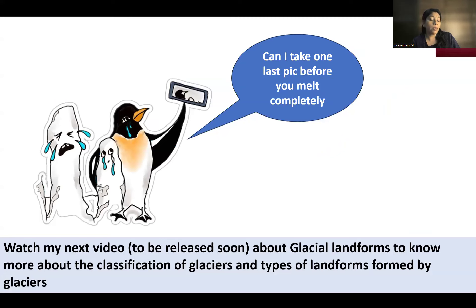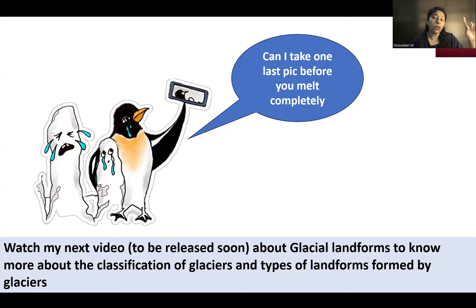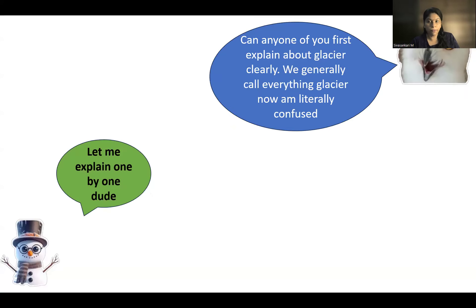This topic is important because questions have been asked in UPSC Mains twice — roughly between 2019 and 2021 — highlighting the impact of losing glaciers. One time they asked about the impact of losing Antarctic glaciers, and another time they asked about the impact of losing Himalayan glaciers on river systems. So there is more possibility of asking questions associated with glacial landforms.